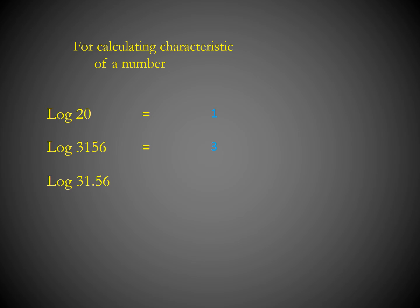For log 31.56: we only look at digits before the decimal point. There are 2 digits (3 and 1) before the decimal. Subtract 1, so the characteristic is 1. For log 0.3156: since there are no digits other than 0 before the decimal, we count the zeros after the decimal point. Here there are no zeros after the decimal, so we add 1 and make it negative: characteristic is −1.